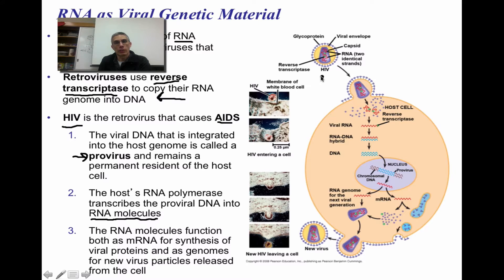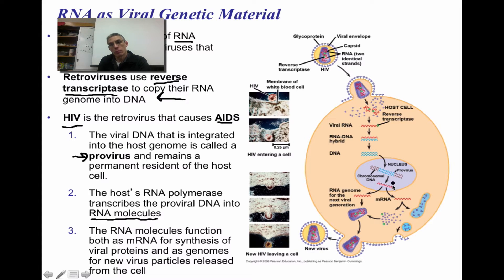Looking at the example of HIV infecting a host cell, it's going to attach to the cell membrane of the host cell and inject its genetic material — in this case RNA. It's going to use reverse transcriptase to create a hybrid RNA-DNA molecule. The DNA itself is going to replicate and be incorporated within the nucleus of that cell, creating that provirus, which becomes a permanent part of the host cell's DNA. As this host cell's DNA is decoded, it's going to make not only proteins for the cell, but proteins to help create future HIV viruses and the RNA genome for those new viral particles.